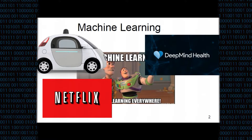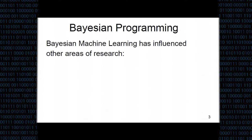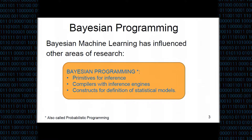But not only is machine learning finding applications, it's also changing the point of view of some areas of research. In particular, the Bayesian approach to machine learning has changed the point of view in programming — in this approach called Bayesian programming, we have primitives in the language that internalize inference at the compiler level, and there are also constructs for definition of statistical models, which is also called probabilistic programming in other communities.